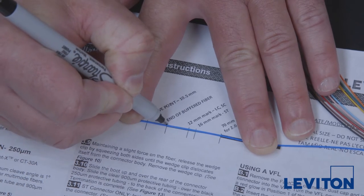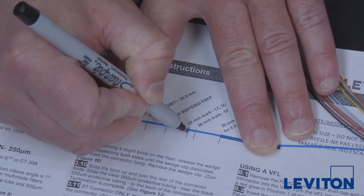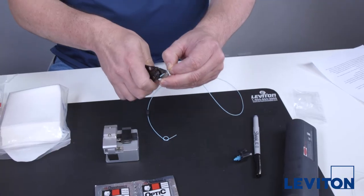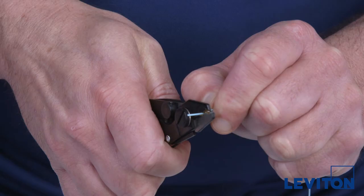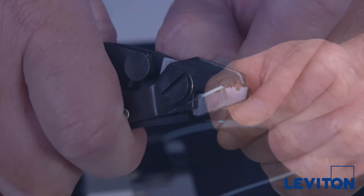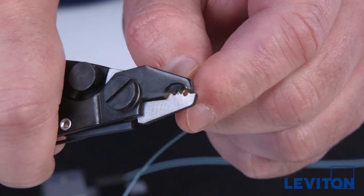Make a mark on the tubing 12 millimeters back from the exit point of the fiber. Remove at least 20 millimeters, about 1 inch, of buffered jacket from the fiber in quarter inch sections back to the zero mark.